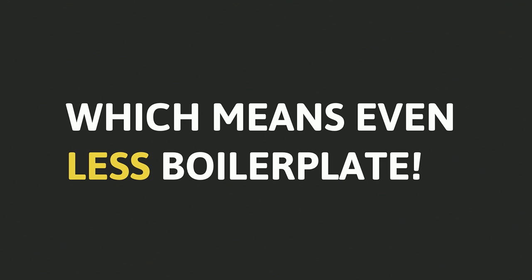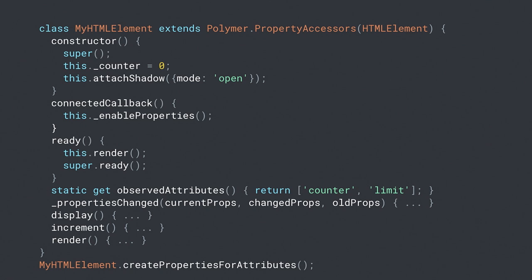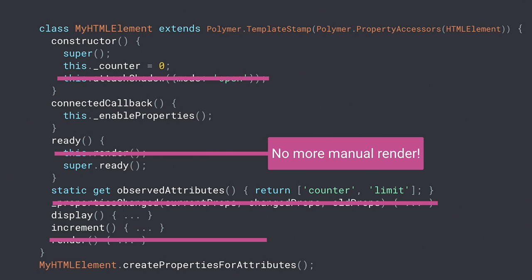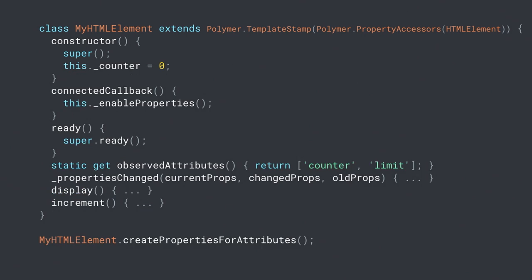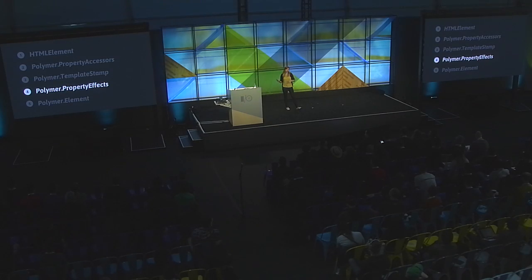Now that we have a template, we can cut off more code. I extend TemplateStamp (which uses PropertyAccessors, which uses HTMLElement — turtles all the way down), then delete everything to do with rendering by hand. In the ready callback, I get the template from somewhere in the document, create my shadow root, and append the template — this creates this.$ and everything in ready. That's all I have to do for Template Stamp: take away the awful render function and convert it into a template.